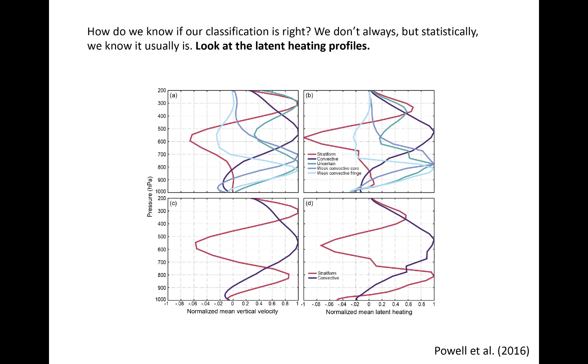Stratiform rainfall generally occurs in regions where diabatic heating is maximized above the zero degree sea level, and then is cooling somewhere underneath.